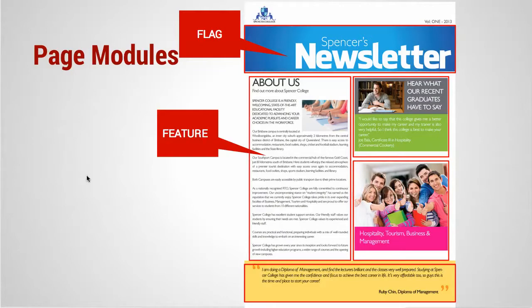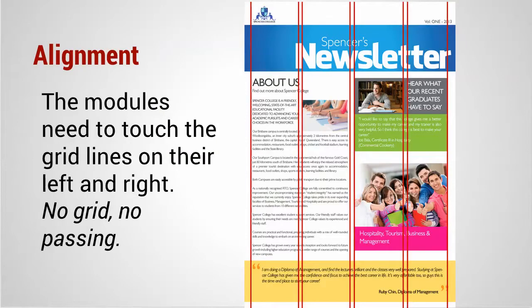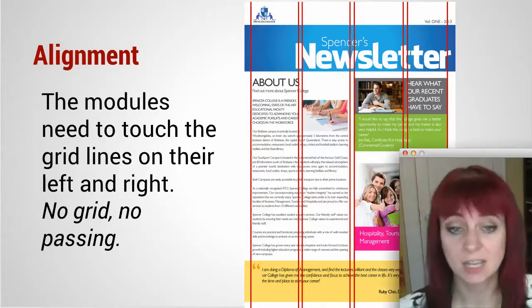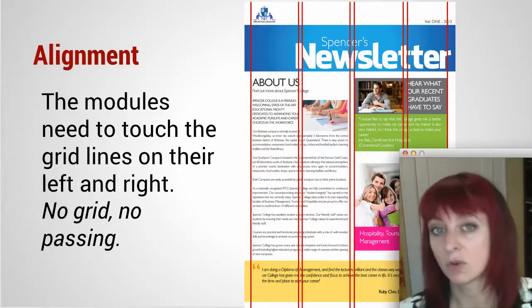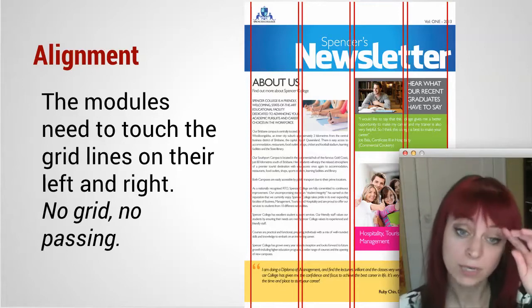Now let's talk about alignment. The modules have to touch their grid lines on their left and right. I'm going to go over grid systems — you learned this in J103 but I want to revisit it. You have to use the grid. If it's clear you did not use a grid, you cannot pass this assignment. All design requires a grid system, so if you're not using one, you're not doing design.